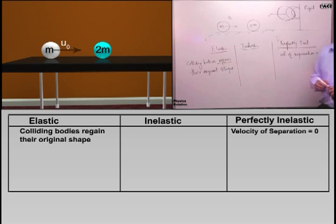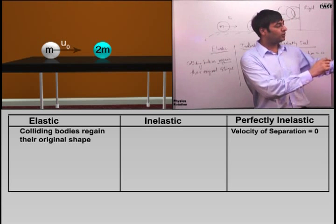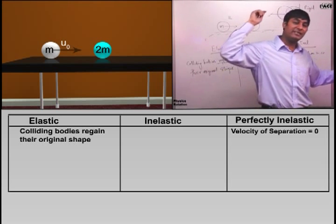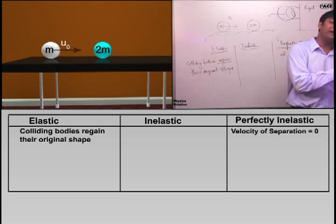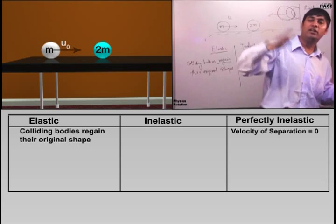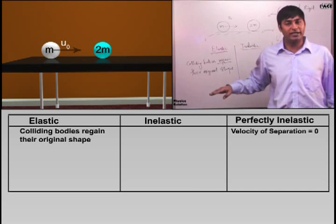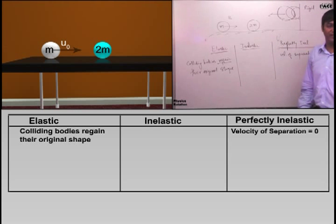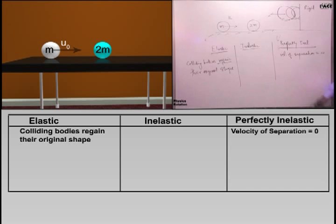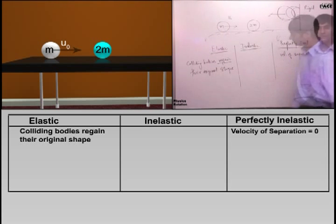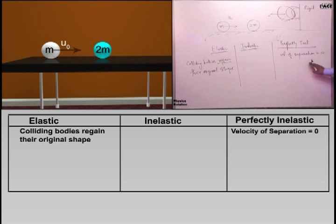There can be cases when a ball thrown at an inclined plane starts moving parallel to the surface after collision. In the perpendicular direction the velocity is zero. That also is an inelastic collision. So please understand: velocity of separation equal to zero is the key point. Generally they stick together, but not always.